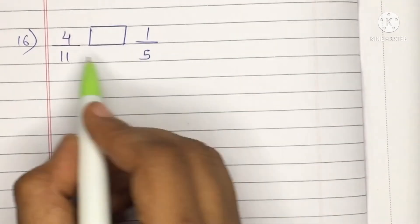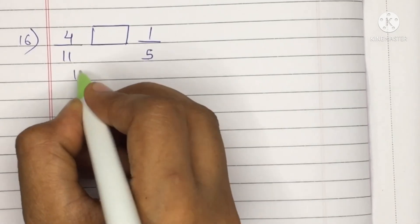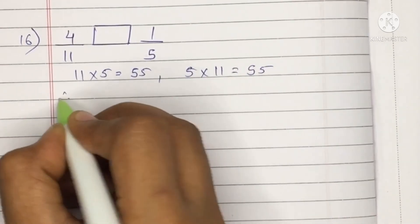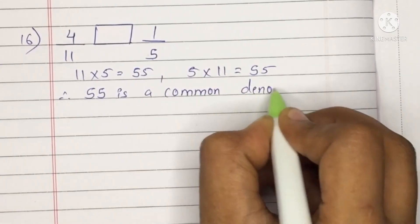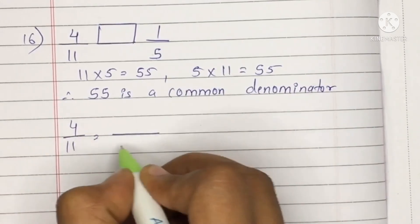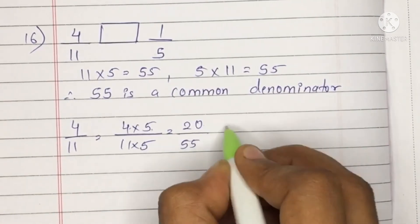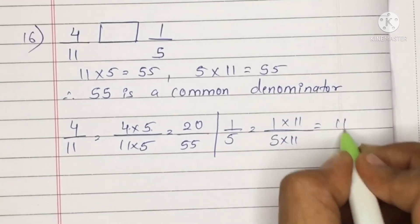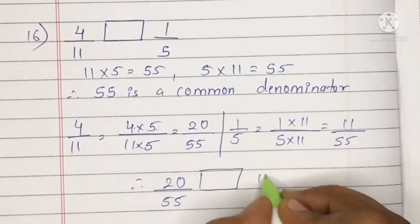Question 16: 4 upon 11 and 1 upon 5. Neither denominator nor numerator is common, and neither appears in the other's table, so we multiply: 11 fives are 55 and 5 elevens are 55. Take 55 as common denominator. Multiply 4 upon 11 by 5: 4 fives are 20, 11 fives are 55. Multiply 1 upon 5 by 11: 1 eleven is 11, 5 elevens are 55. Now 20 upon 55 vs 11 upon 55 — 20 is greater than 11, so 4 upon 11 is greater.